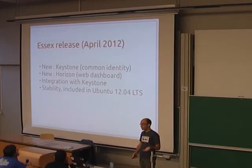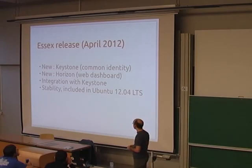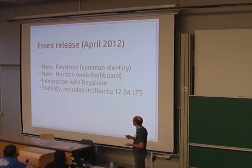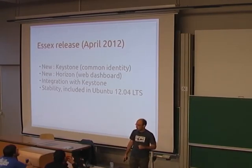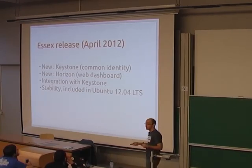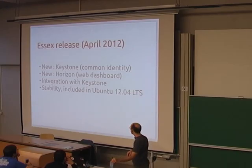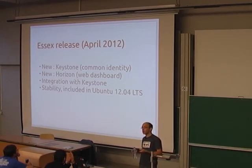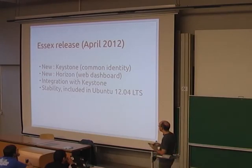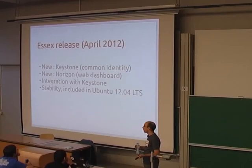We had two releases over the last year. The first, in April, was the Essex release, or 2012.1. This release saw the addition of two new core projects: Keystone, which provides authentication across the range of services, and Horizon, which is a web dashboard for interacting with resources through a UI. The main focus was integrating with Keystone, since each project previously had its own way of handling users. The other focus was stability, as it was the first release integrated into a Linux distro for long-term support — specifically Ubuntu 12.04 LTS, which was a good sign of stability for a five-year support commitment.